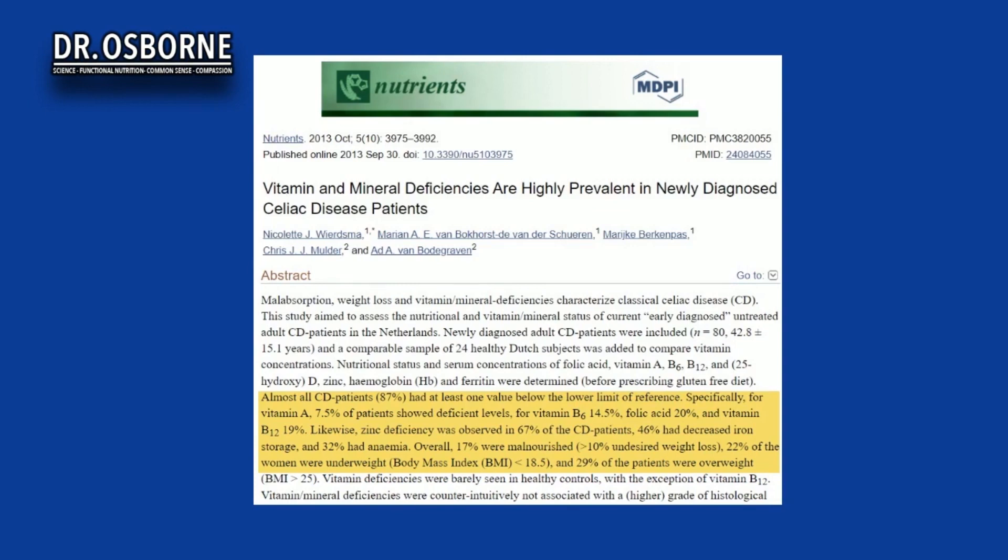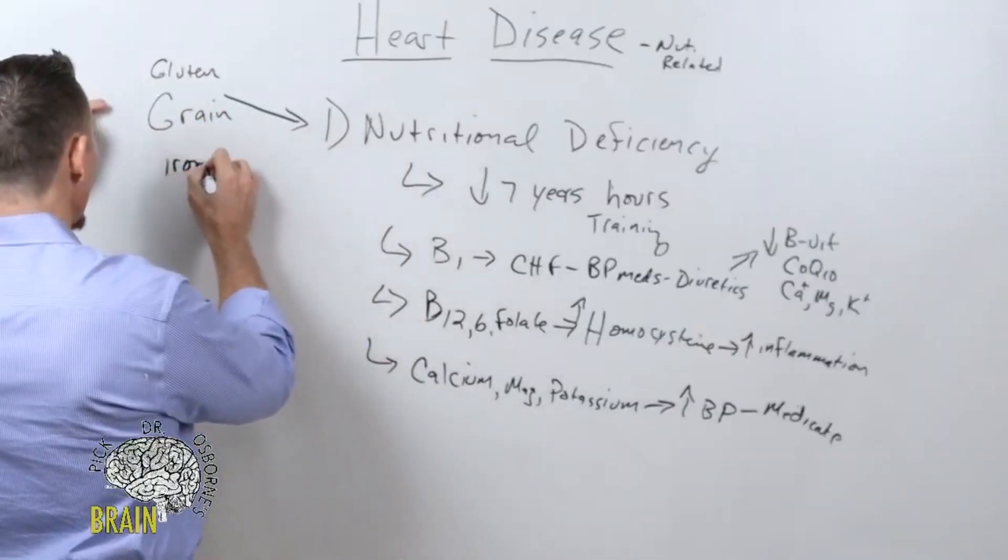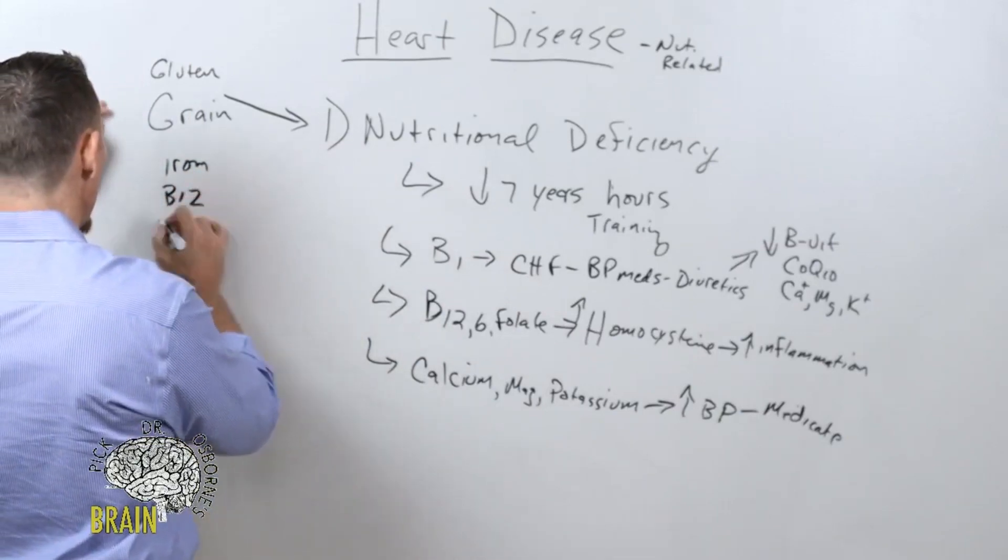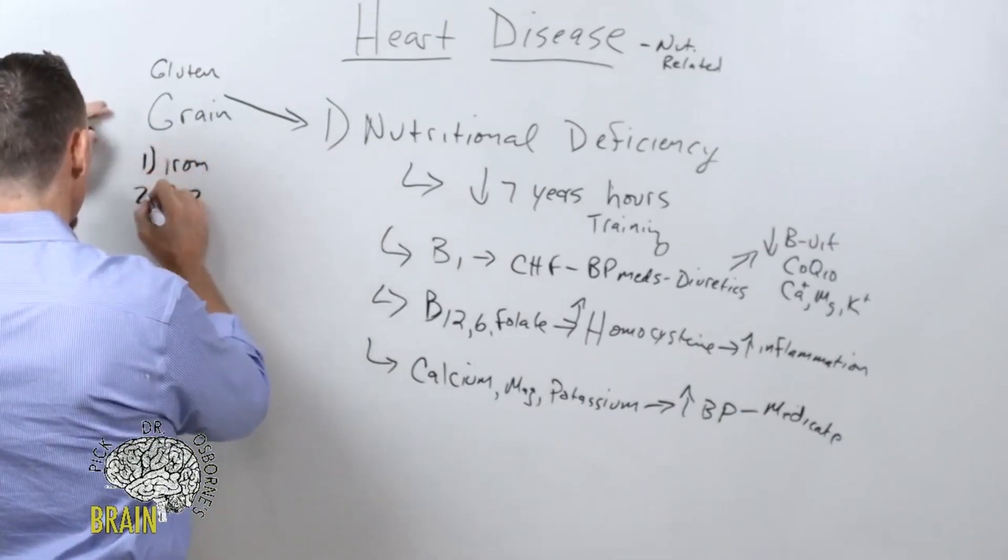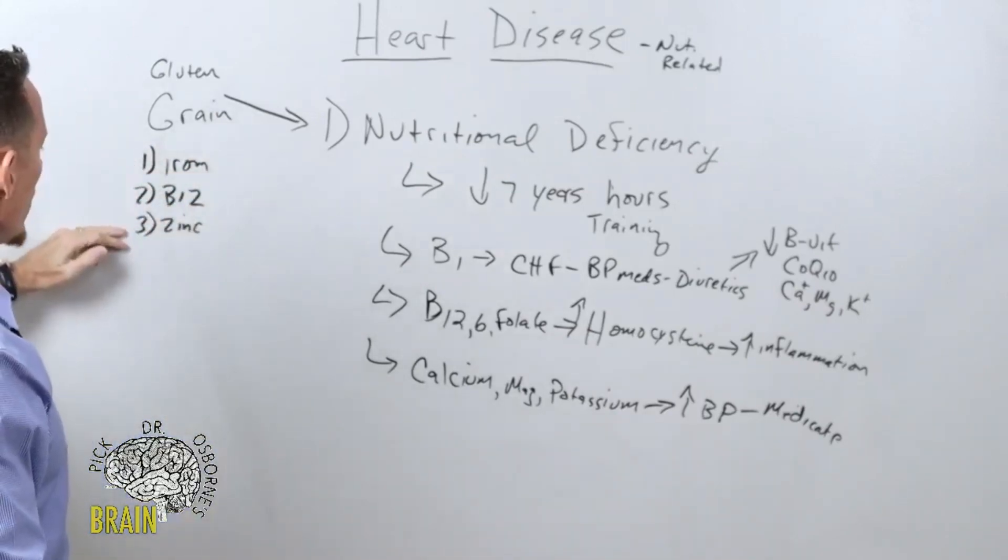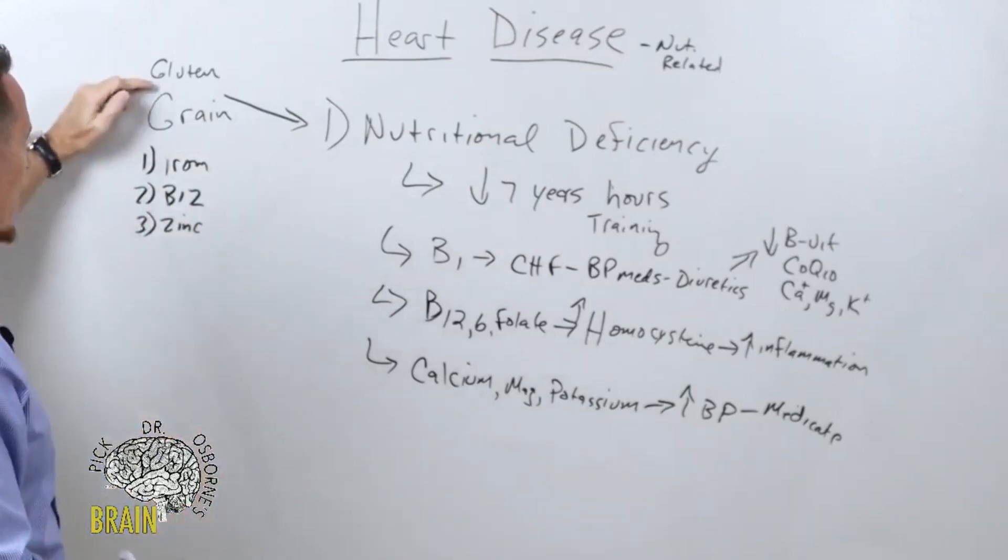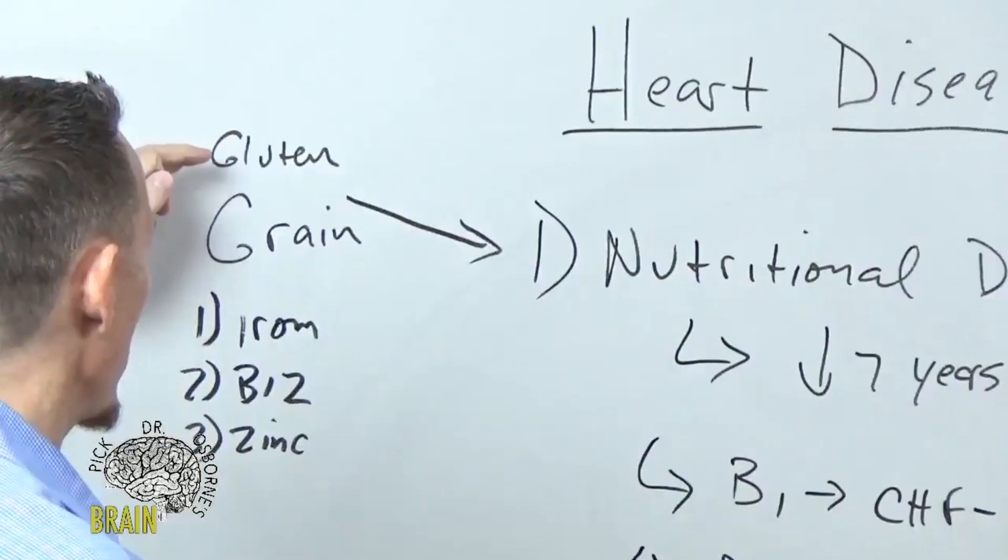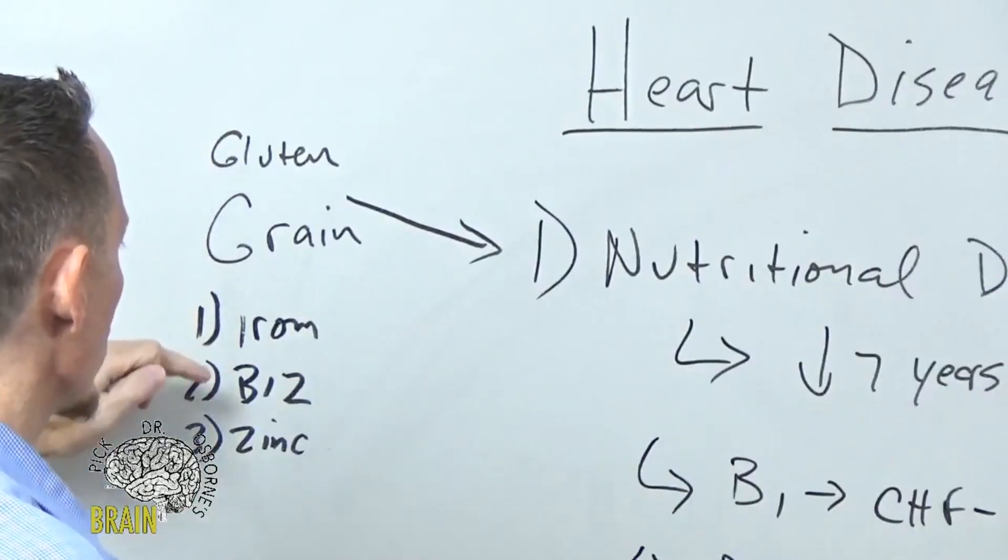Here's the pattern I see in people with gluten sensitivity. Number one deficiency is iron, the most common. This is my clinical experience. Number two is vitamin B12, and number three is zinc. Those are the top three in terms of how frequent I see them for people that come into me that don't know they're gluten sensitive. They've developed heart disease, they didn't even realize that gluten was playing an issue in it, but these are the top three deficiencies.